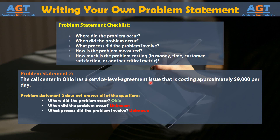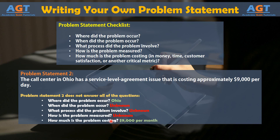What process did the problem involve? The answer is unknown. How is the problem measured? The answer is unknown. How much is the problem costing, in money, time, customer satisfaction, or another critical metric? The answer is $9,000 per day.